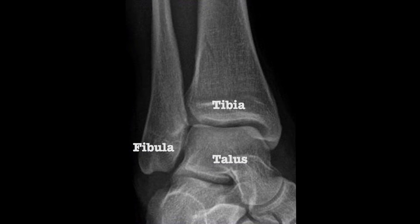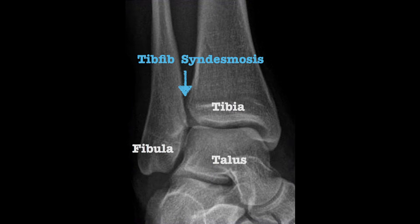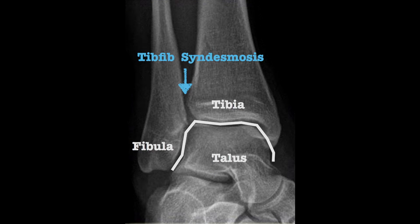The ankle is a modified hinge joint, made up of three bones: the tibia and fibula of the leg and the talus of the foot. The distal tibia and fibula are bound by multiple strong ligaments and a broad fibrous membrane, together known as the distal tibiofibular syndesmosis. This distal union of these bones produces a bracket-shaped socket known as the mortise, to which the body of the talus fits.